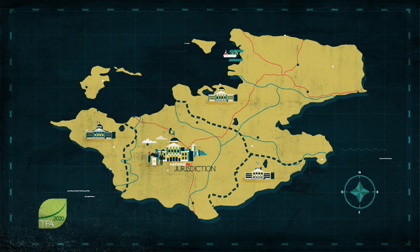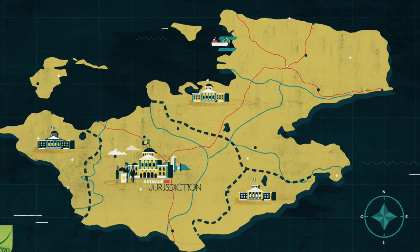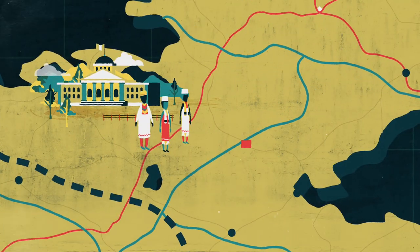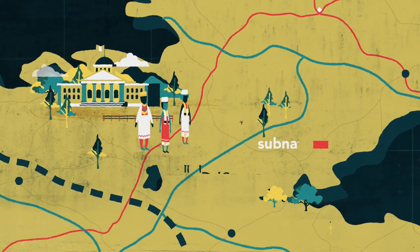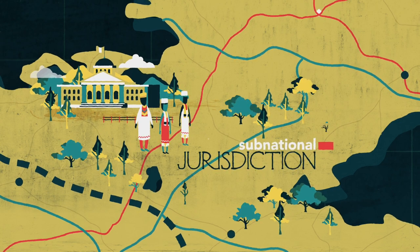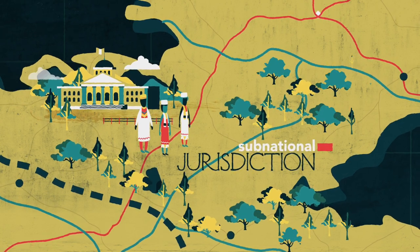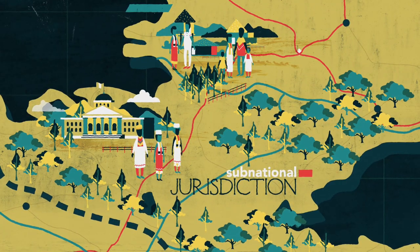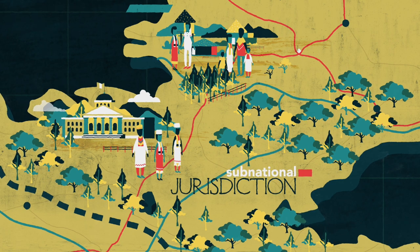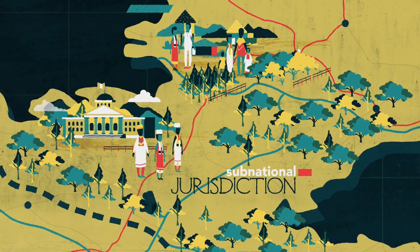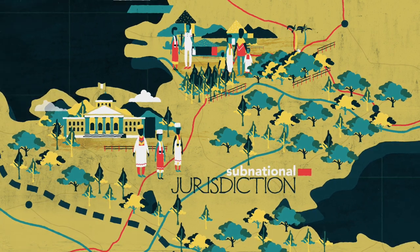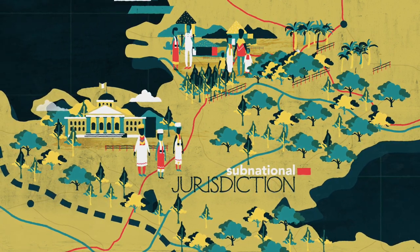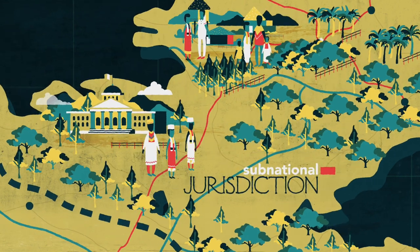The jurisdictional approach highlights the critical role of government and the need for wall-to-wall holistic approaches to forest and land use governance across a defined territory as key components of any realistic effort to protect forests.